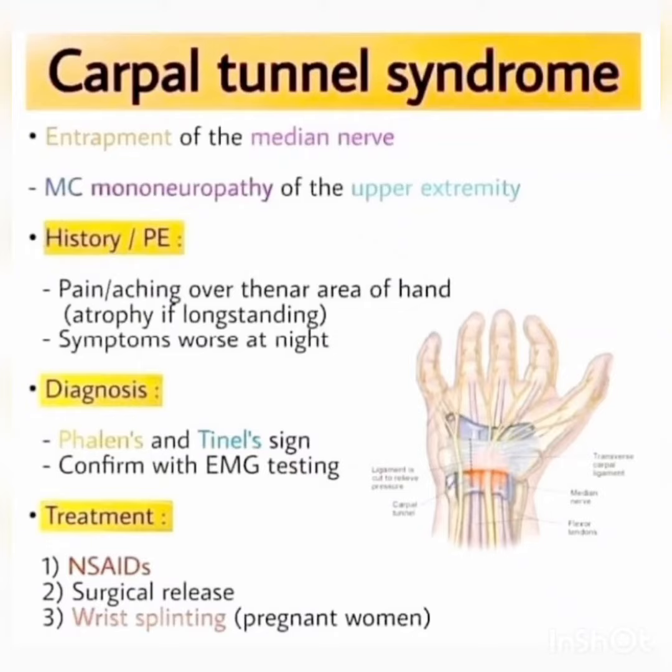In this video, I am discussing carpal tunnel syndrome. Carpal tunnel syndrome occurs due to entrapment of the median nerve. Remember, the median nerve is entrapped, making it the most common mononeuropathy of the upper extremity.